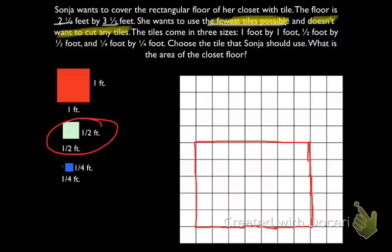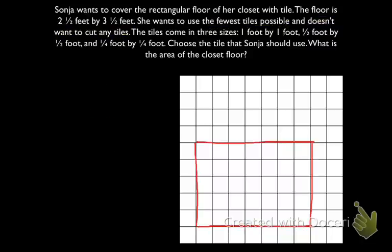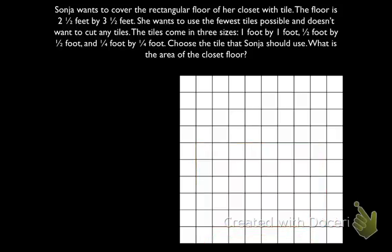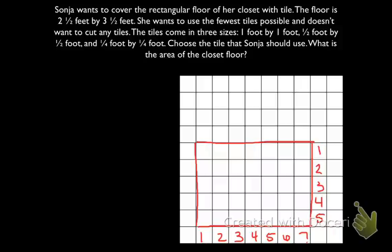Now that we've made Sonia's rectangular floor, let's figure out how many squares are in the diagram. One way we can do that, like we know with area, is to take the length times the width — that gives us our total area. So we'll count how many tiles are on the long side and how many tiles are on the shorter side. On the long side there are seven tiles, and on the shorter side there are five tiles. So that would be seven tiles times five tiles, giving us thirty-five total tiles.